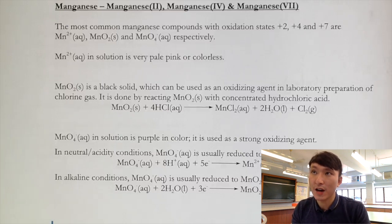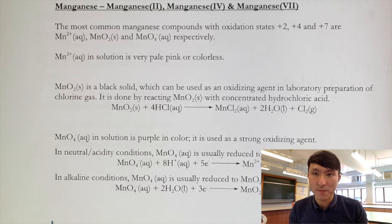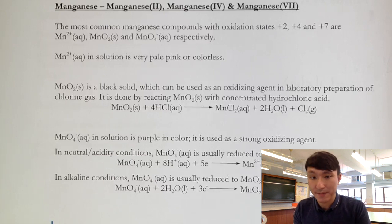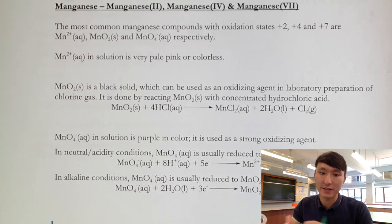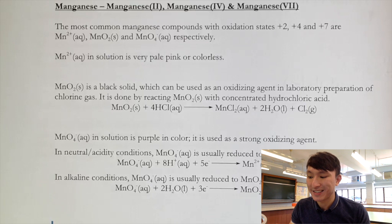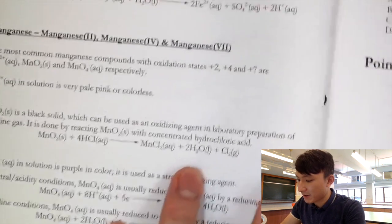In contrast, Group 1, 2, and 3 metals cannot act as both reducing and oxidizing agents because their elemental forms are unstable and they only have one stable oxidation state. They cannot move between +2 and +3, etc. This ability is distinctive to transition metals.